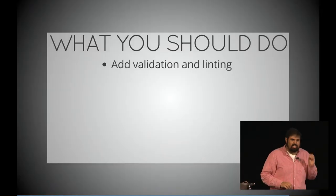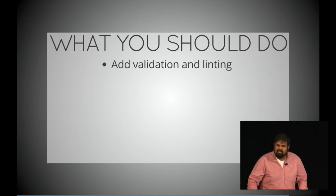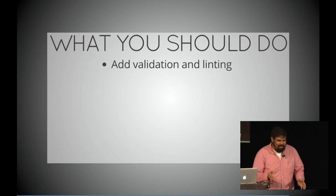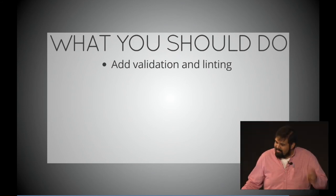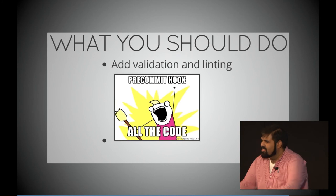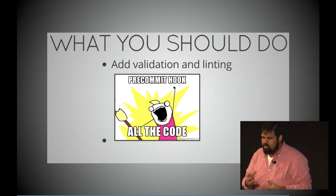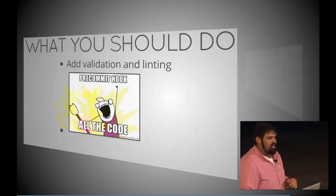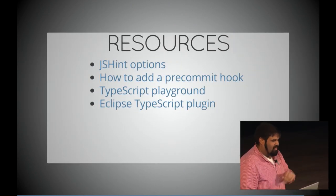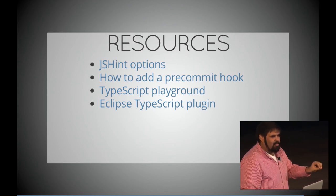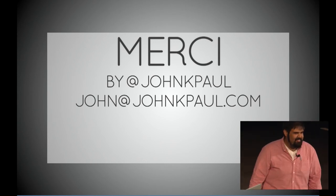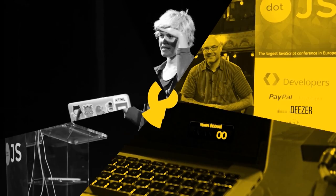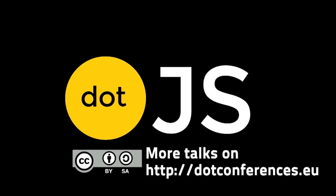I want you to go back to work and add validation and linting to your code base. Be like a Nike developer — just do it. Don't think about anything else, just go back and do it. Then after you add those two things, add a pre-commit hook to all of the code. This is the way you get the kind of enforcement where you can feel the security and confidence with every single piece of code that ever makes it to your production system. I have some resources here on how to add a pre-commit hook, your JSHint options, and a lot of other things. Merci beaucoup. I'll see you next time.